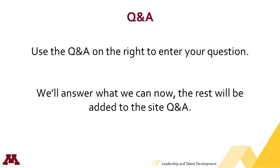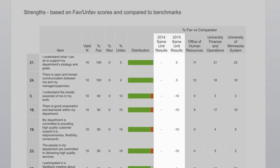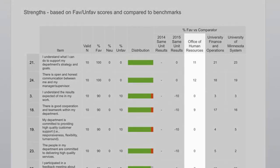There's a question about re-summarizing the benchmark data. So we have two years of trend data, which we refer to as trend. Then we have, as we've had in the past, three internal benchmarks. When you hit Filters and Comparators at the top right, you'll see a guide that's dynamic and will translate what you're seeing for each comparator. For our unit comparator, Leadership and Talent Development is within the Office of Human Resources — so that's our unit comparator. Our campus is the Twin Cities campus, and that's the comparator that references university finance and operations.